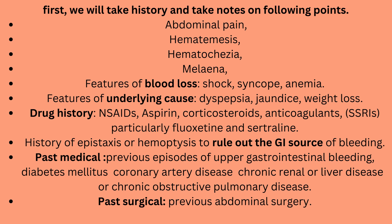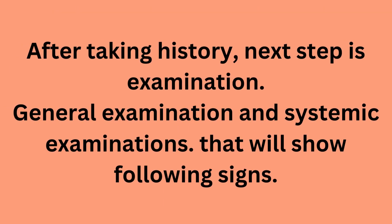Past medical history should include previous episodes of upper gastrointestinal bleeding, diabetes mellitus, coronary artery disease, chronic renal or liver disease, and chronic obstructive pulmonary disease. Past surgical history should include previous abdominal surgery. After taking history, the next step is examination.